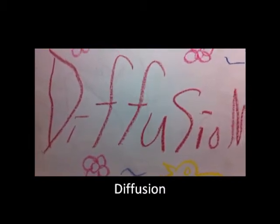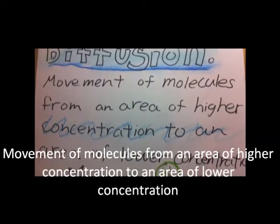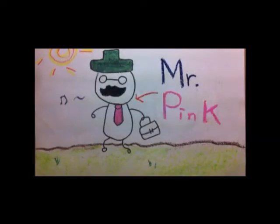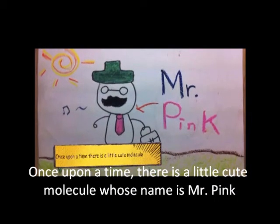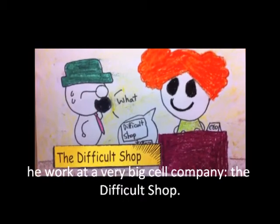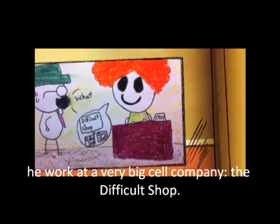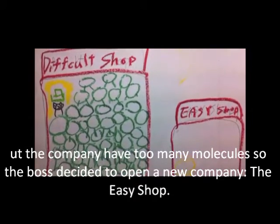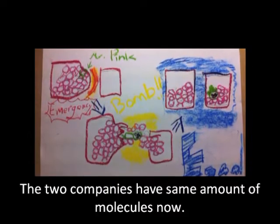Fusion. Once upon a time, there is a little Q molecule whose name is Mr. Pink. He's at a very big cell company, the Difficult Shop. The company has too many molecules, so the boss decided to open a new company, the Easy Shop.